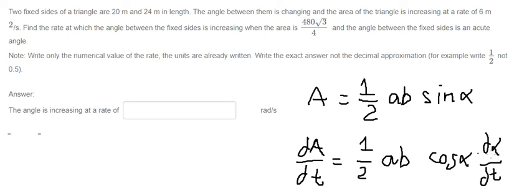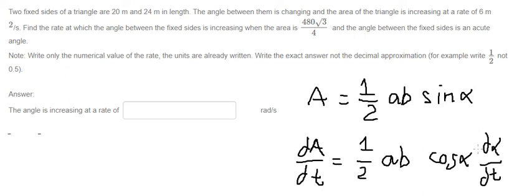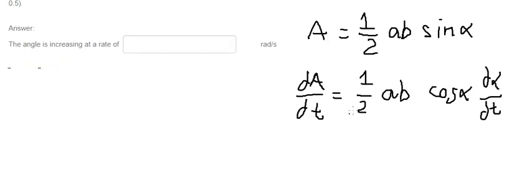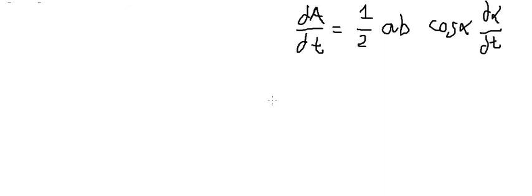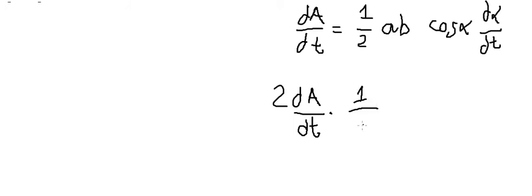The question asks us to find dα/dt, so we rearrange: move one-half times ab times cosine alpha to the left side, giving dα/dt equals 2 times dA/dt times one over (ab cosine alpha).